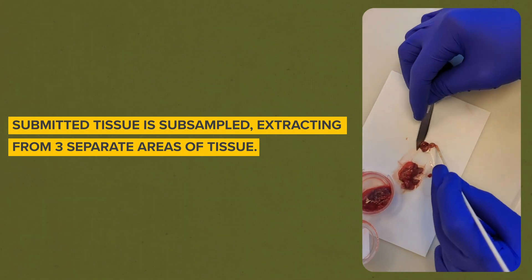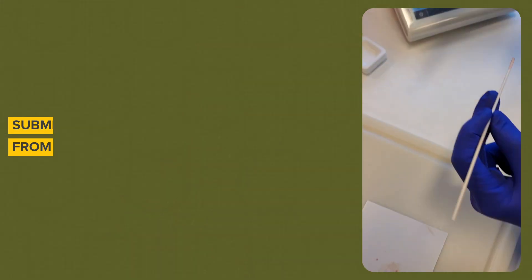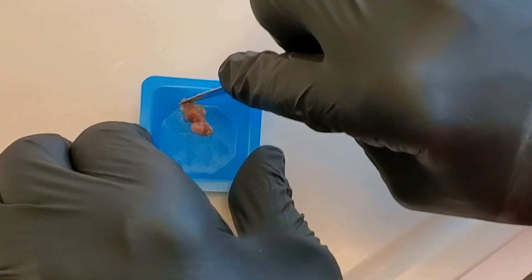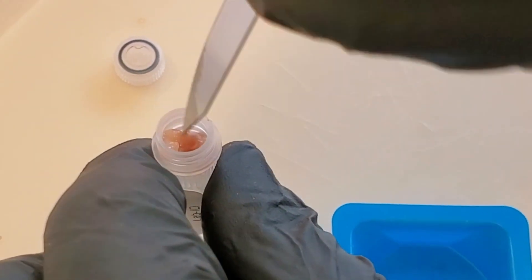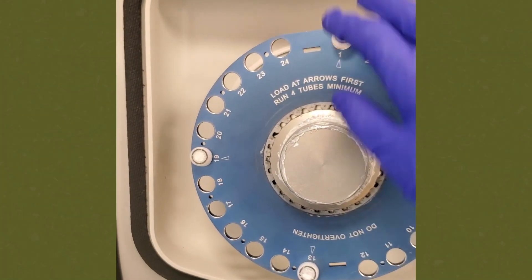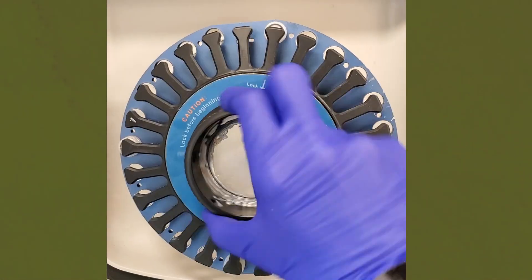We sub-sample the tissue, extracting from three separate areas of the submitted tissue. Next, we weigh the sample, chop it up, and put it in a grinding tube. The sample in the grinding tube is homogenized to make a lymph node smoothie.